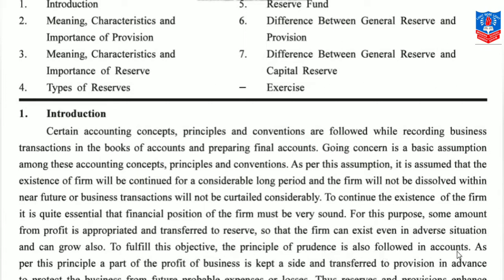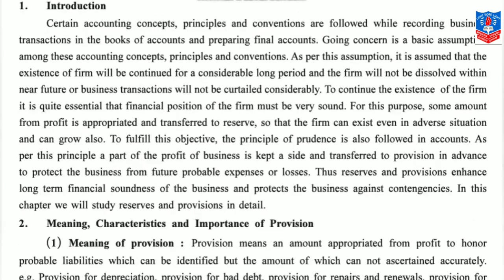To fulfill this objective, the principle of prudence is also followed in accounts. As per this principle, a part of profit of the business is kept aside and transferred to provision in advance to protect the business from future probable expenses or losses. Each year, whenever the firm is earning profit, some part of that profit should be kept aside and transferred to provisions for uncertainties of the future. If we need to bear expenses or losses, we can utilize money from those provisions.